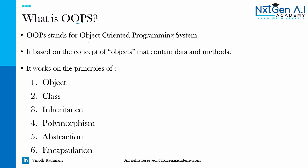What is OOPS? OOPS stands for object oriented programming system. From the name itself you can understand we are going to discuss about the object. Java is totally based on the concept of objects. Object means data and method. The OOPS consists of six important concepts: object, class, inheritance, polymorphism, abstraction, and encapsulation.